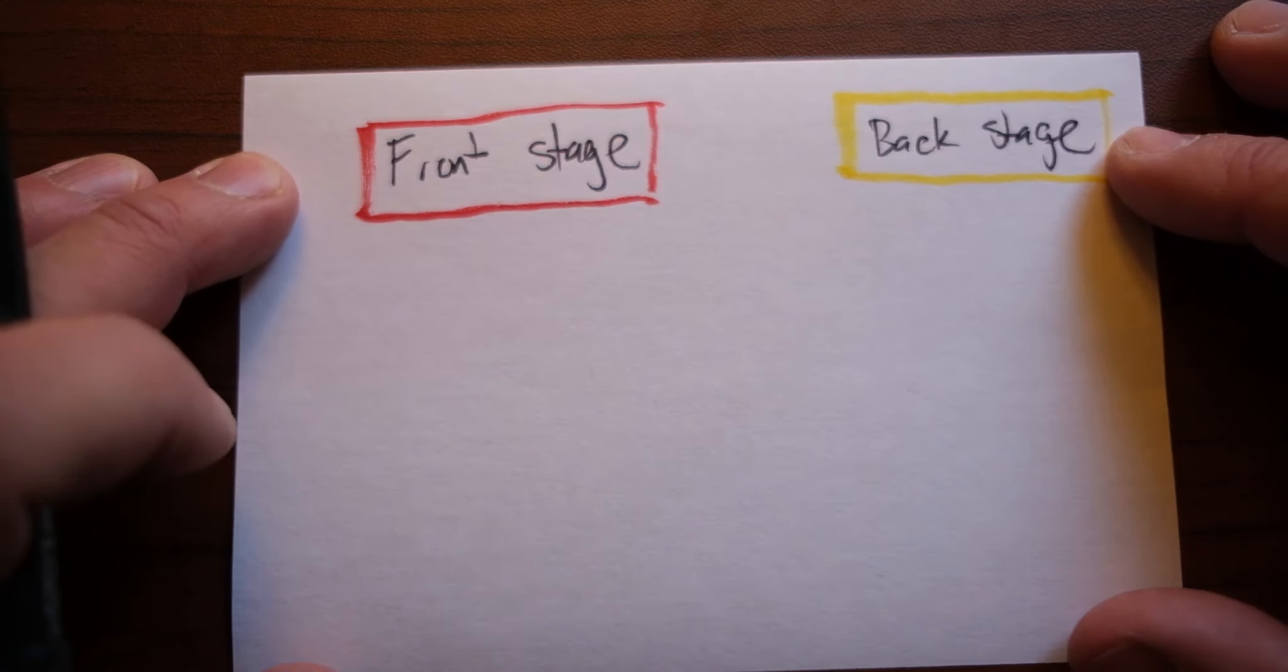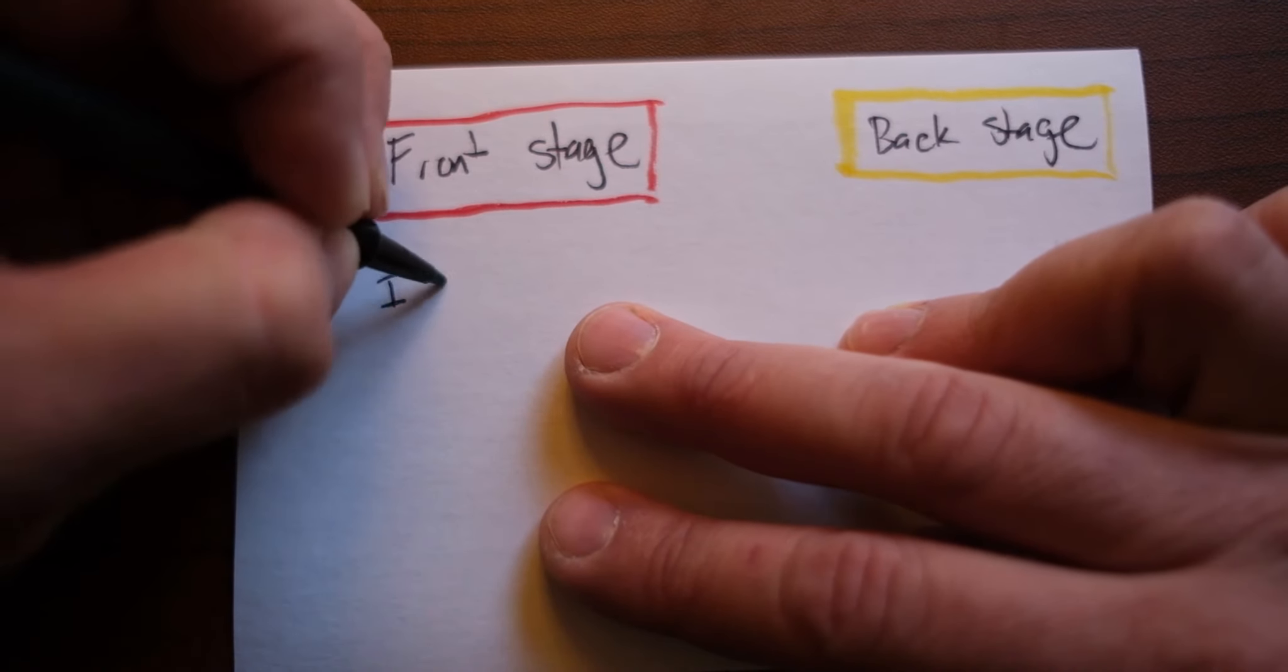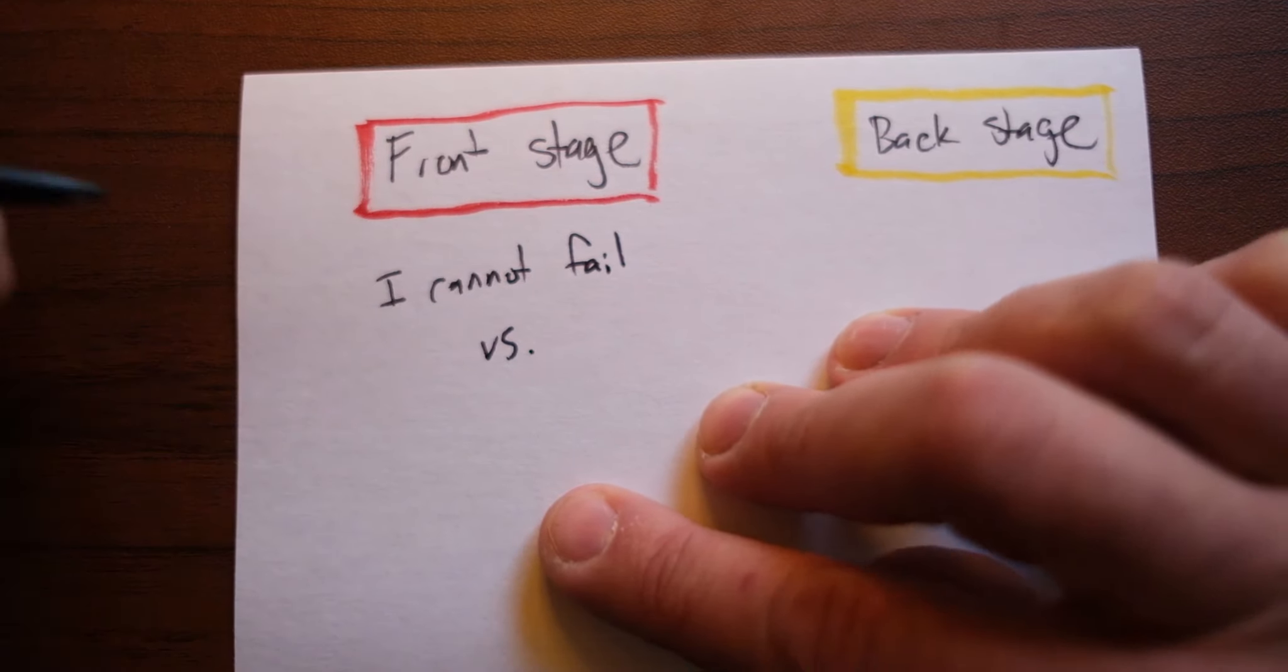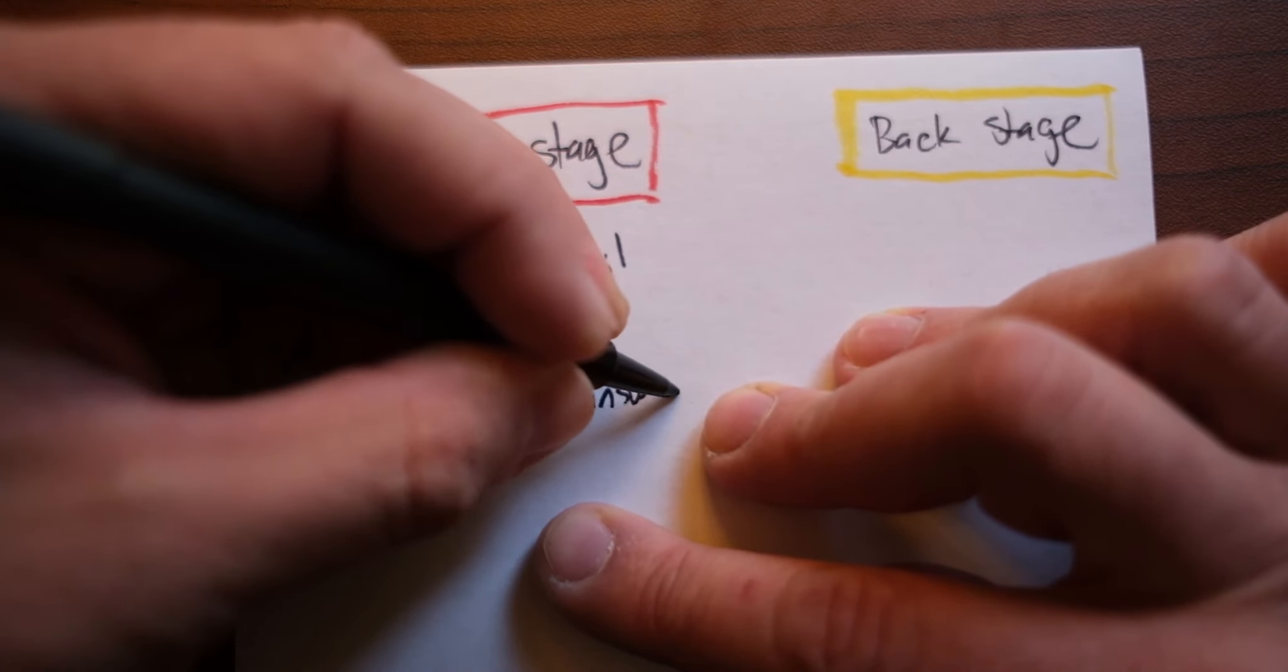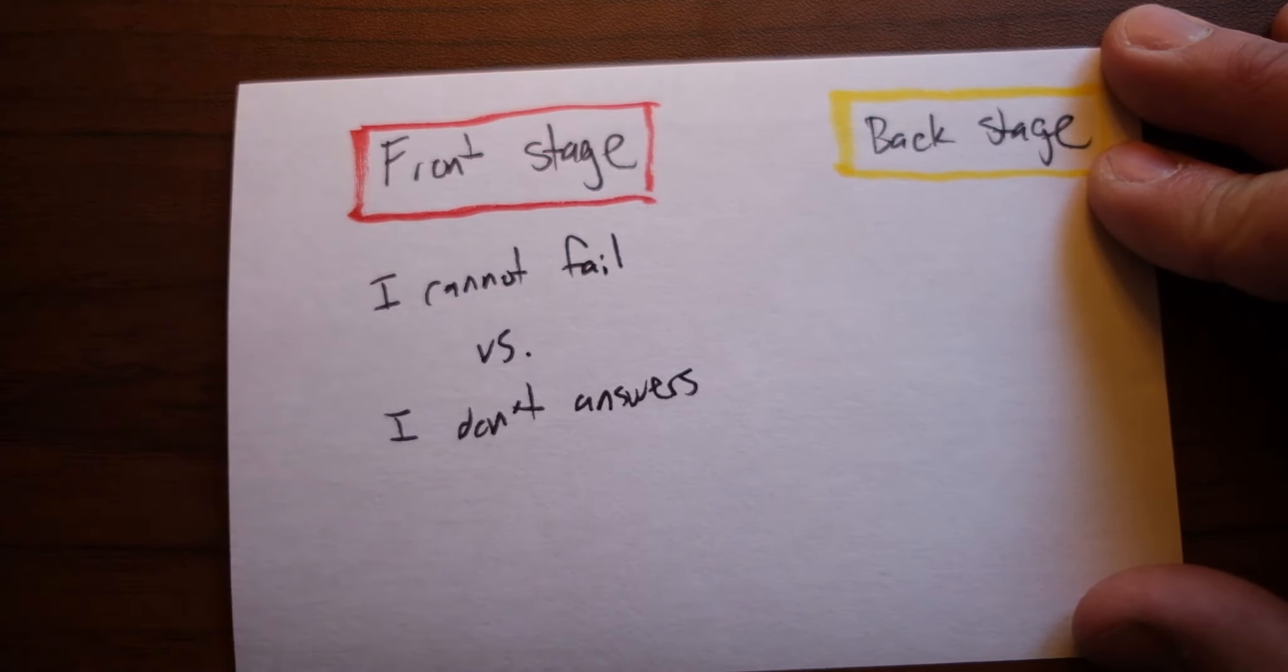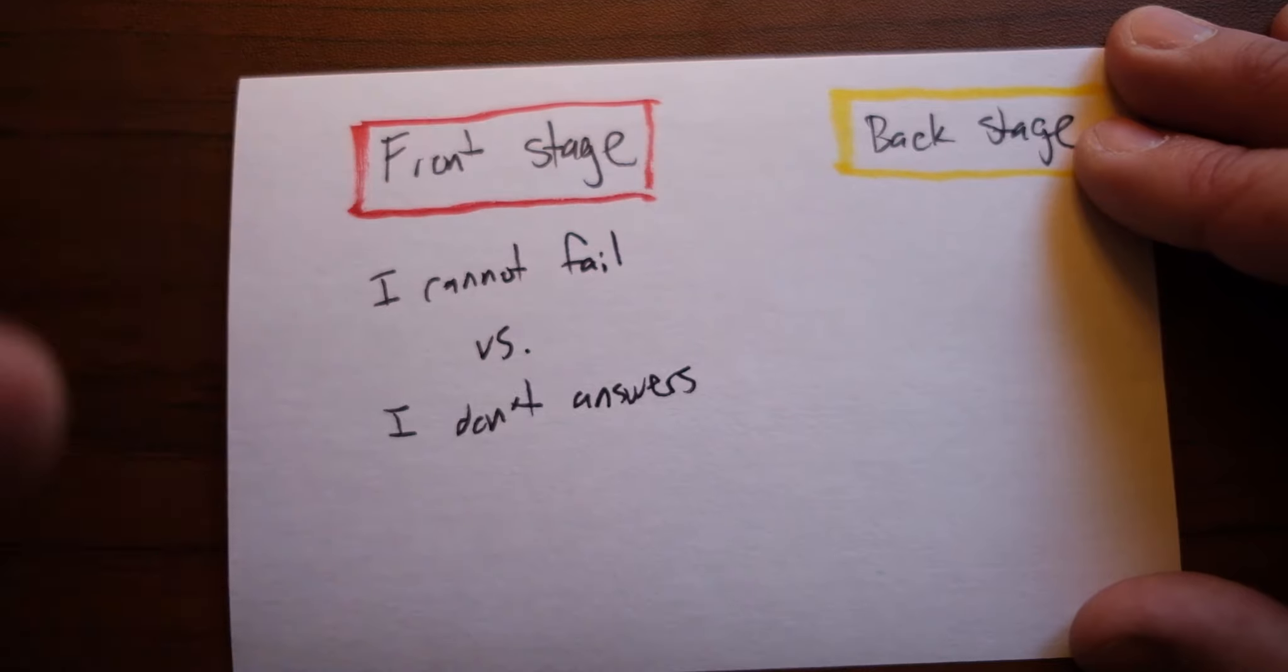Now, the reason why creating a margin is hard is that there's a number of hurdles in the way. So from the front stage, there is this dissonance between saying, I cannot fail that we heard from Latasha versus this idea of I don't have all the answers and I need to be more adaptable. And sometimes this idea of I cannot fail, sometimes this is fueled by a corporate brand or sometimes it's caused by an internal identity like having a leadership style based on immutable authority.